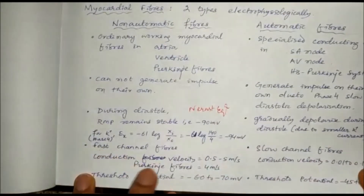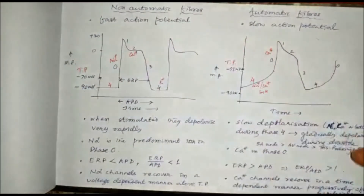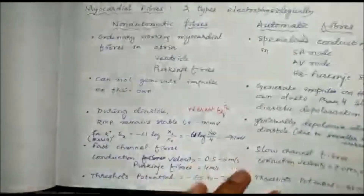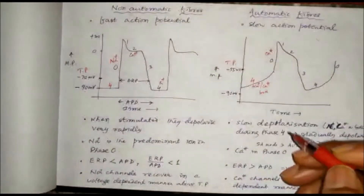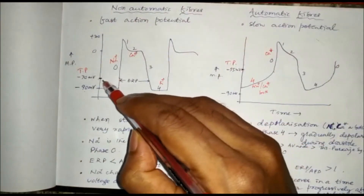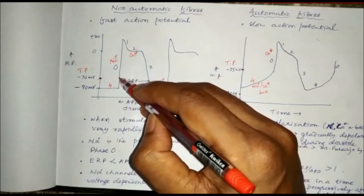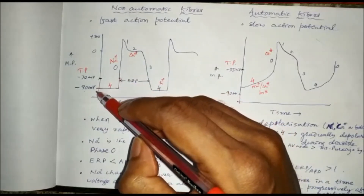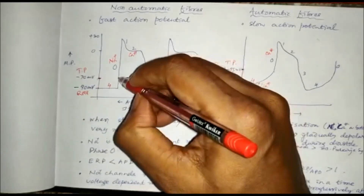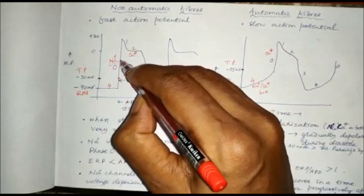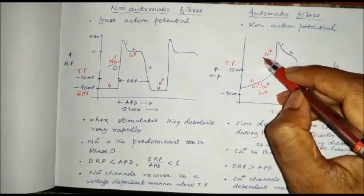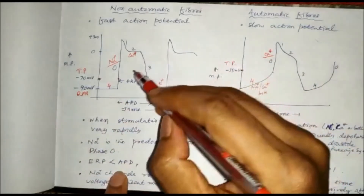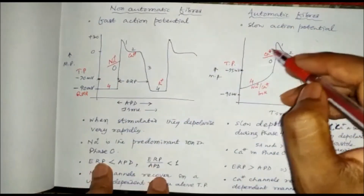The threshold potential is −60 to −70 millivolts in case of non-automatic fibers (fast action potential), and −45 to −55 millivolts for automatic fibers. Once the impulse is strong enough to shift the resting membrane potential to the threshold potential, depolarization occurs. In non-automatic fibers, this is due to sodium channel opening in phase zero, whereas in automatic fibers, phase zero involves calcium channel opening.